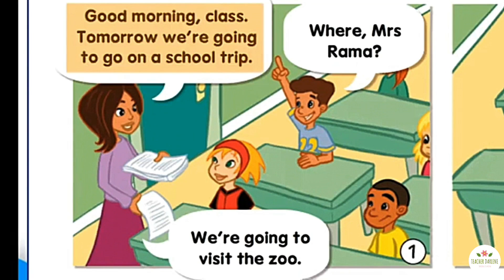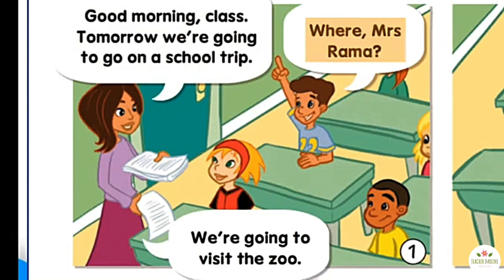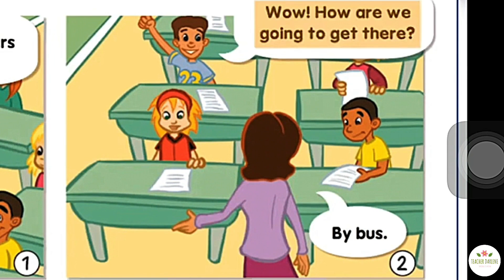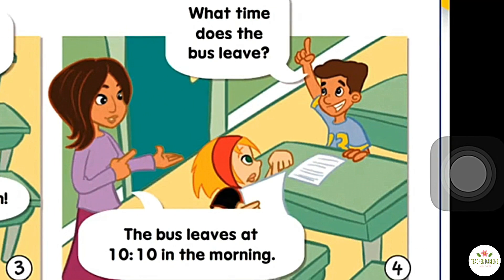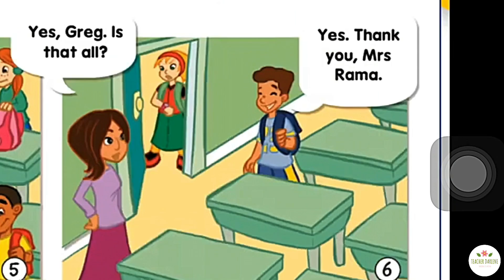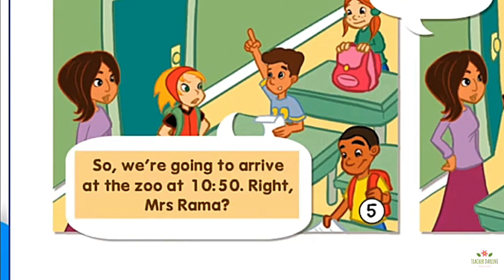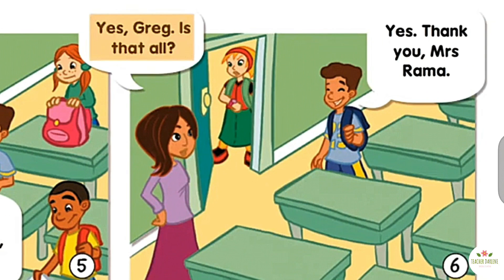Good morning, class. Tomorrow we're going to go on a school trip. Where, Mrs. Rammer? We're going to visit the zoo. Wow. How are we going to get there? By bus. How long does it take by bus? It takes about 40 minutes, Greg. Yeah. What time does the bus leave? The bus leaves at 10.10 in the morning. So, we're going to arrive at the zoo at 10.50. Right, Mrs. Rammer? Yes, Greg. Is that all? Yes. Thank you, Mrs. Rammer.